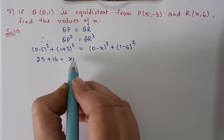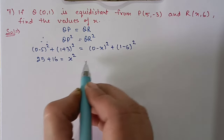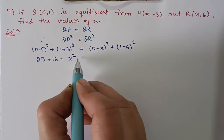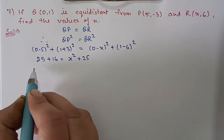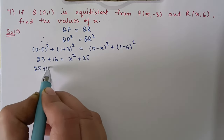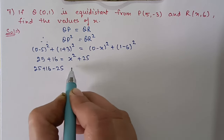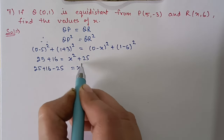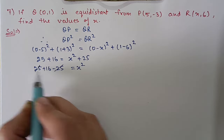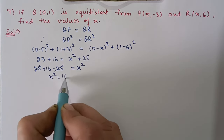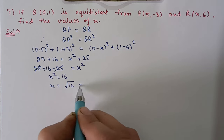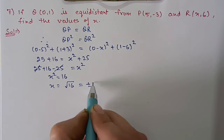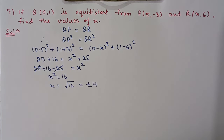On the right side, (-x)² = x² and (1 - 6)² = (-5)² = 25. Shifting 25 to the left side: 25 + 16 - 25 = x², so x² = 16. Therefore x = ±√16 = ±4. The values of x are +4 and -4.